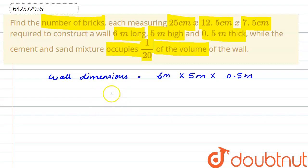We know that the volume of a cuboid is length into breadth into height. So the volume of the wall will be equal to 6 multiplied by 5 multiplied by 0.5. So the volume of wall comes out to be 15 meter cubed.